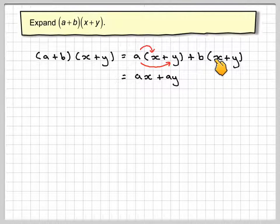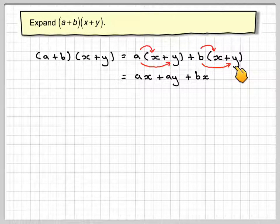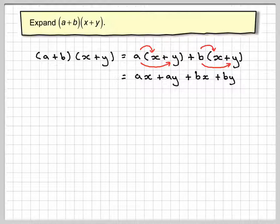And then we do b times x, which is bx, and then b times y, which gives me by.